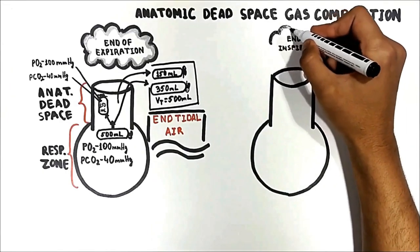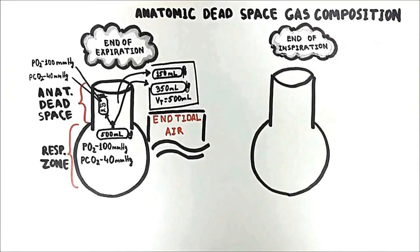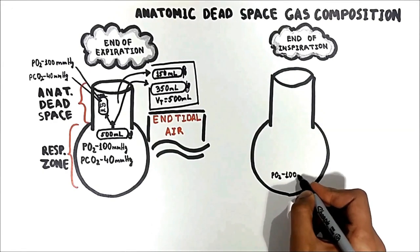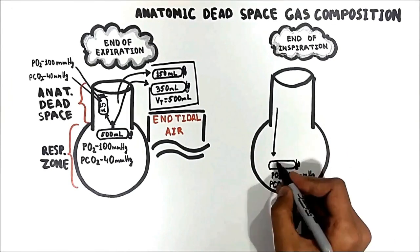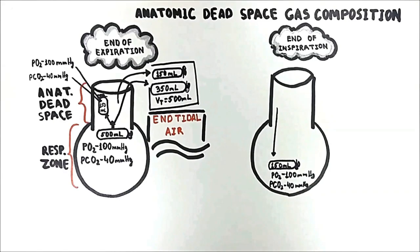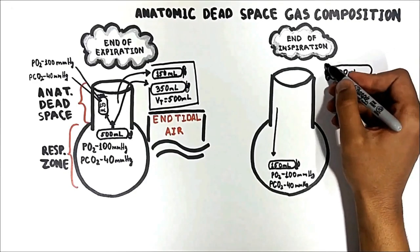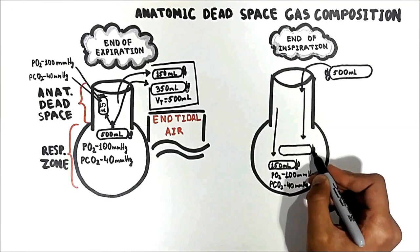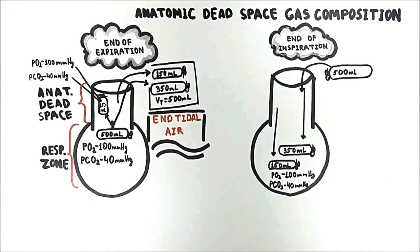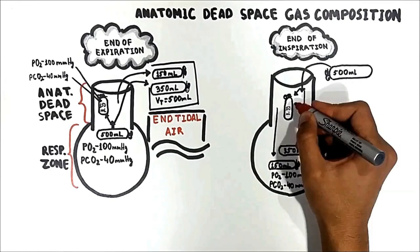As for anatomic dead space gas composition at the end of inspiration, it differs from the end of expiration. The gas composition is constant in the respiratory zone: PO2 is 100 mmHg and PCO2 is 40 mmHg. When a person starts breathing in, the first 150 milliliters of air comes from the anatomic dead space — air that remained there at end of expiration, which has the same composition as alveolar air. After that, 500 milliliters from the inspired tidal volume enters the lungs: 350 milliliters is added to the respiratory zone and the remaining 150 milliliters stays in the conducting zone.